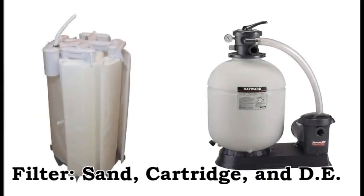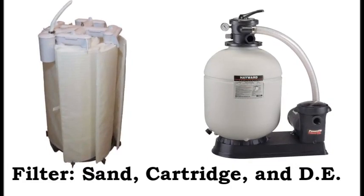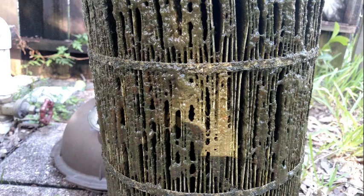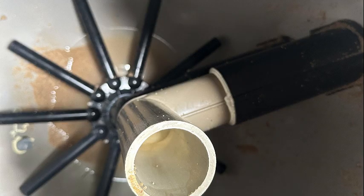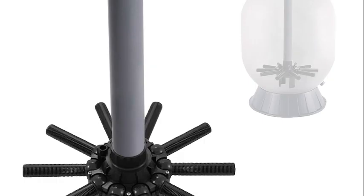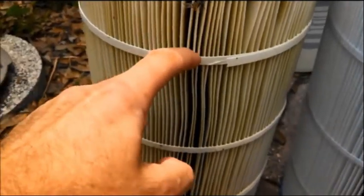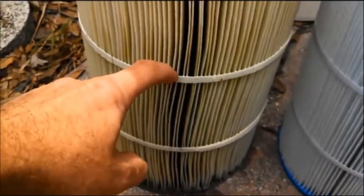Next is our filter, which includes sand, cartridge, and DE filters. Filters are meant to capture dirt, and if they're not working at optimal level, all the dirty water can re-enter the pool. For sand filters, check the laterals and the standpipe for broken or cracked areas — if they're broken, you'll need to replace them, as a broken lateral or standpipe will allow dirty water to re-enter the pool and the dirt will settle to the bottom. Check your cartridge filter for holes, rips, or tears and replace it if needed. For DE filters, check the grids for holes, rips, or tears and replace the grids if necessary.